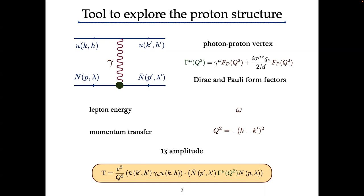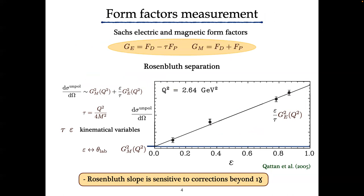Electron-proton scattering is a simple two-to-two process, depending only on two independent kinematic variables: the lepton energy in the proton rest frame and the momentum transfer squared. From this expression we can calculate the simplest observable — the unpolarized cross-section. In experiment, people write it in terms of electric and magnetic form factors, which are Fourier transforms of magnetization and charge distribution inside the proton in the non-relativistic limit.